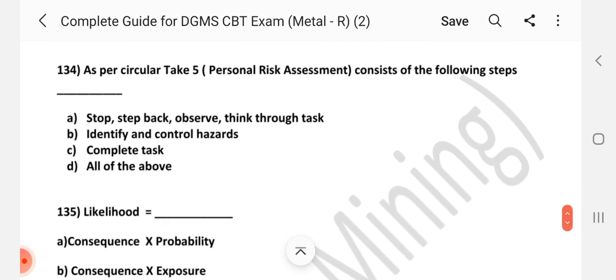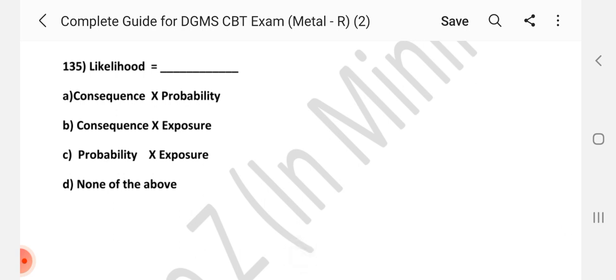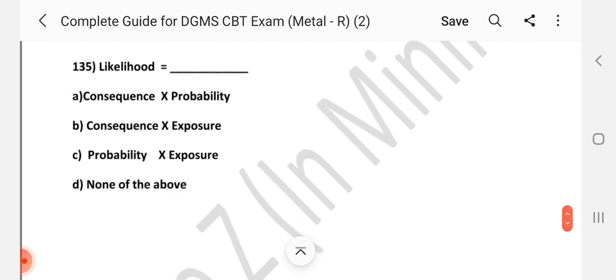Question number 134. As per circular Take 5 personal risk assessment consists of following steps. Answer is D, all of the above. Question number 135. Likelihood is dash. Answer is C, probability into exposure. Friends thanks for watching. If you want this PDF booklet, this MCQ booklet PDF, please comment your mail ID in common box. Thank you very much.